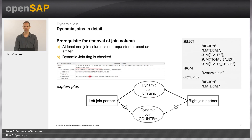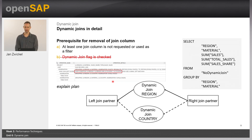You can also see that in the explain plan. Now, let's switch off the dynamic join flag. Again, country is not requested, but because it is defined in the join, it will still be processed at the join node and the join will be done on both columns.